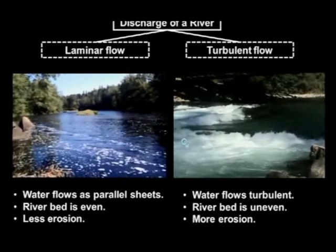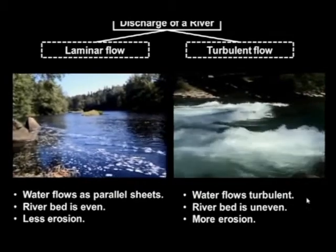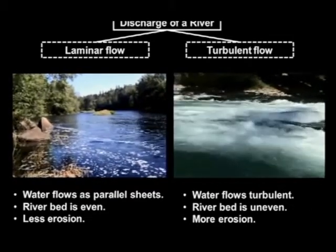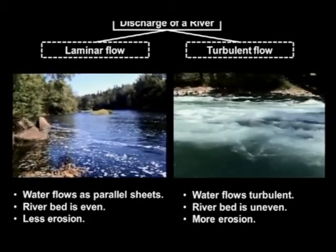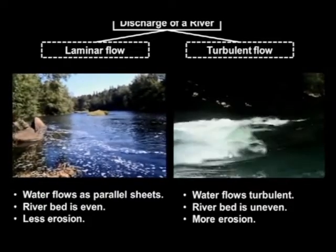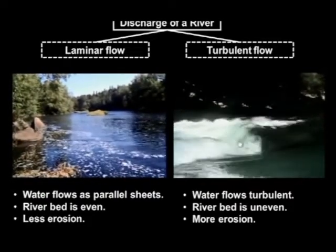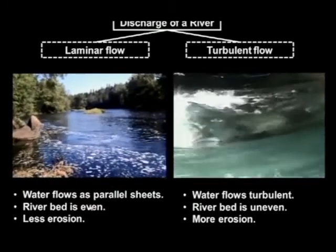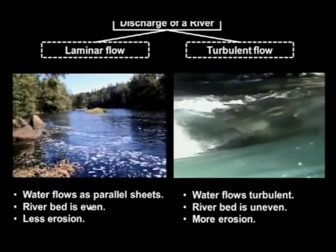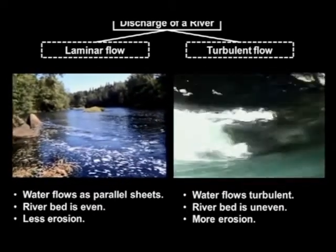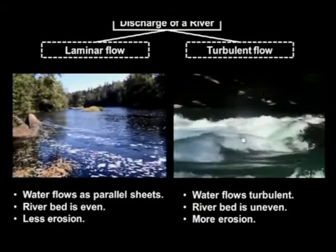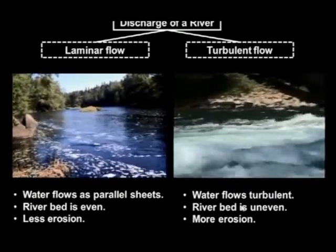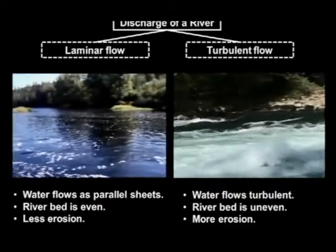If you have a look at this, you will see that on one side the water flows as parallel sheets — beautiful parallel sheets. But on the other side, the water is flowing very turbulently. Why does it flow in parallel sheets? Because the riverbed at the bottom will be even. If you look at the turbulent side, the riverbed will be uneven.